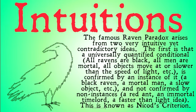So, finding a particular black raven: if I have the law 'all ravens are black' and I find a black raven, it provides some amount of confirmation for that claim. If I find ten black ravens, it provides more confirmation; if I find a hundred black ravens, and so on. A mortal man, or an object that's slower than the speed of light, similarly. And they are not confirmed by non-instances.